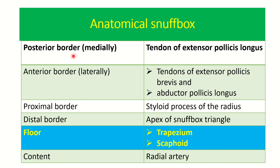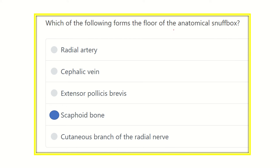To summarize: posterior medial boundary — one tendon, extensor pollicis longus; anterolateral — two tendons, extensor pollicis brevis and abductor pollicis longus; proximal border — styloid process of the radius; distal border — apex of the anatomical snuffbox triangle; floor — two important bones, trapezium and scaphoid; contents — radial artery, but cephalic vein crosses the anatomical snuffbox.